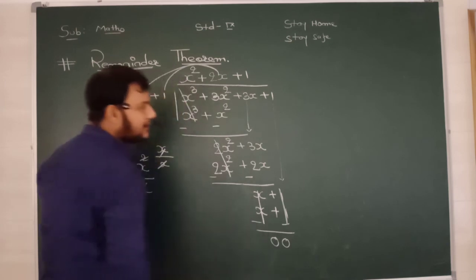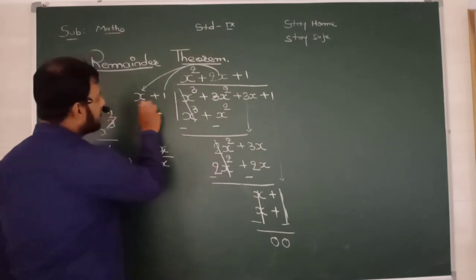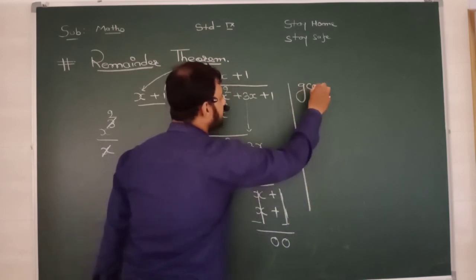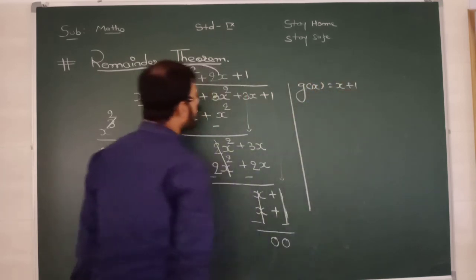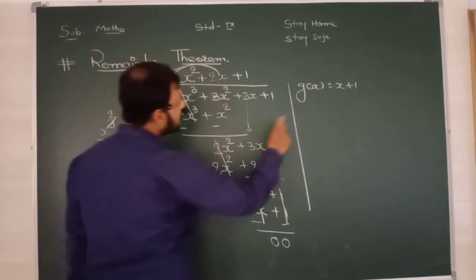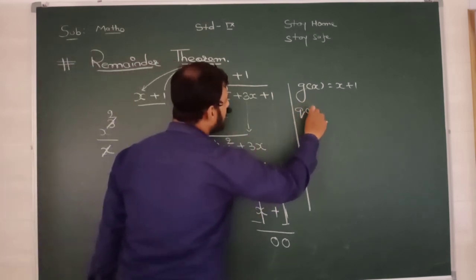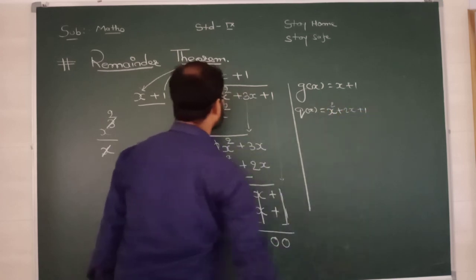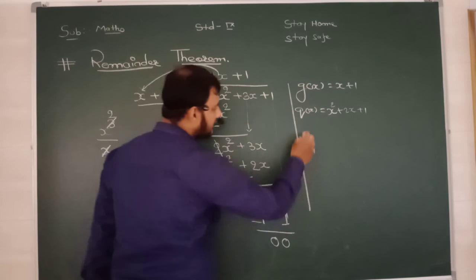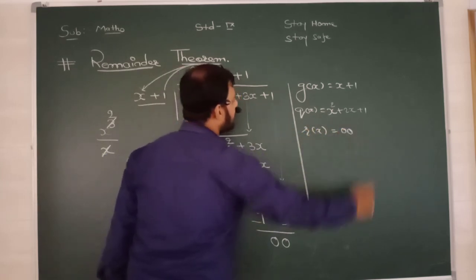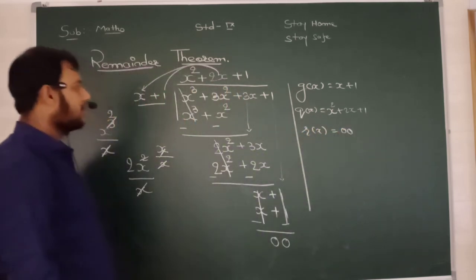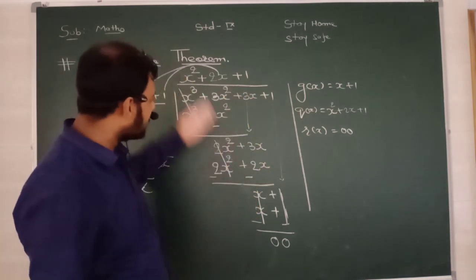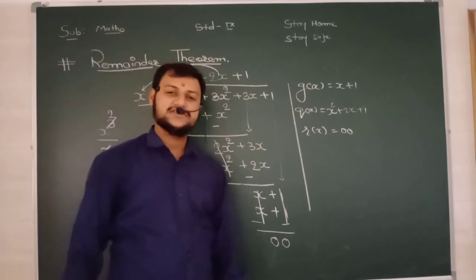See, x + 1 is what? g(x). x + 1 is g(x). This is our quotient - Q(x) = x² + 2x + 1. Remainder: R(x) = 0. And this is our dividend. Dear students, this is the long division method.